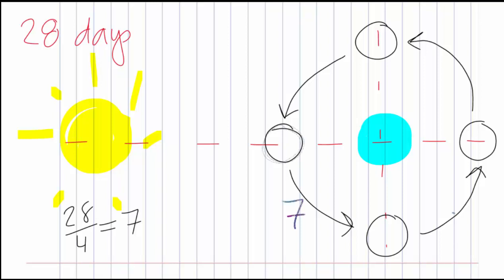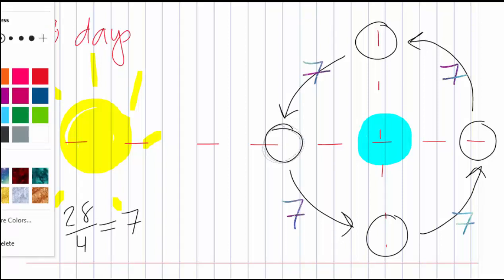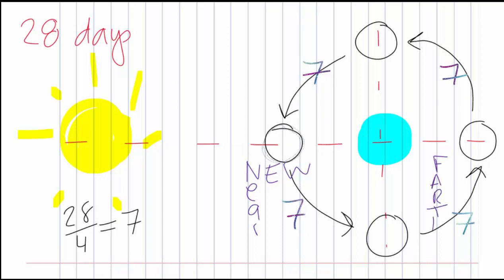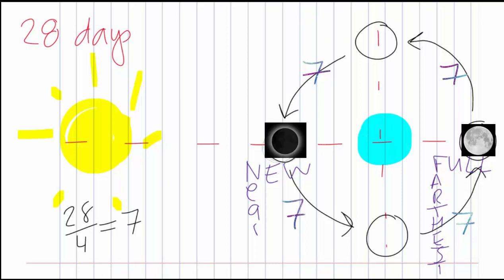So seven days, seven days, seven days, seven days. The moon phase nearest to the sun — we're going to call that one a new moon. The moon phase farthest from the sun — we're going to call that a full moon. So you already know two of the four main moon phases. Just remember: near is new, farthest is full.